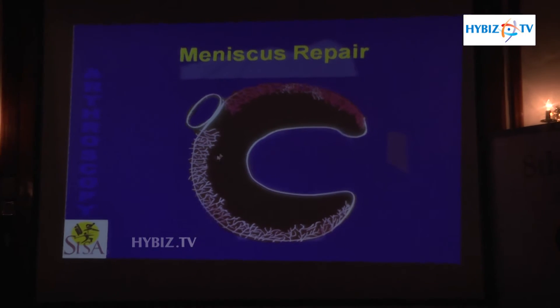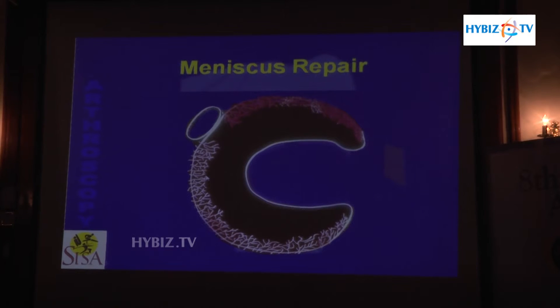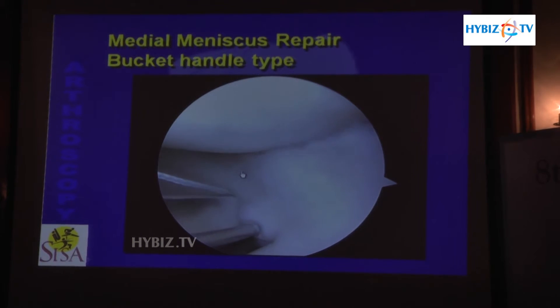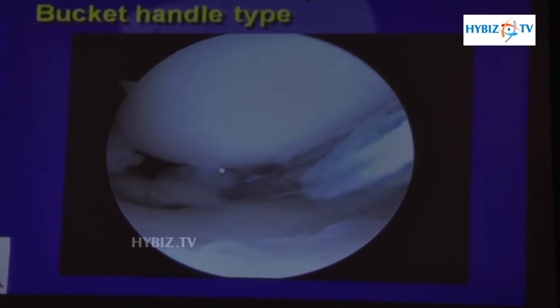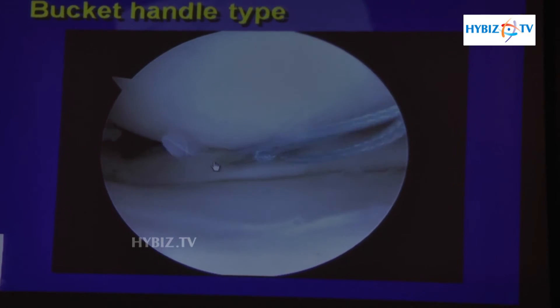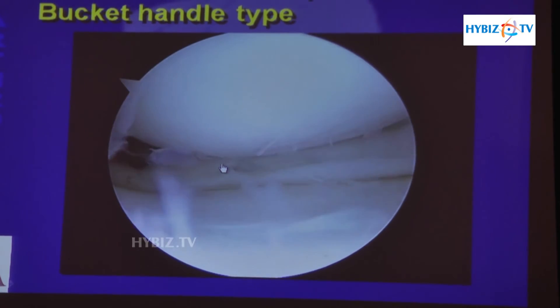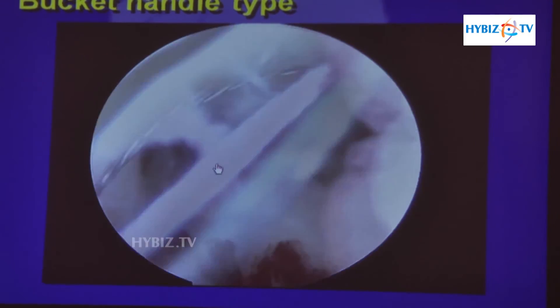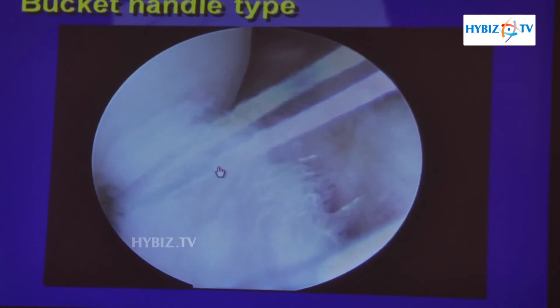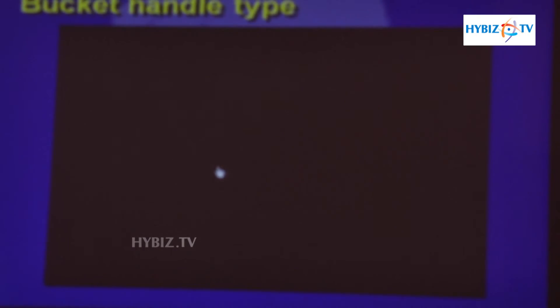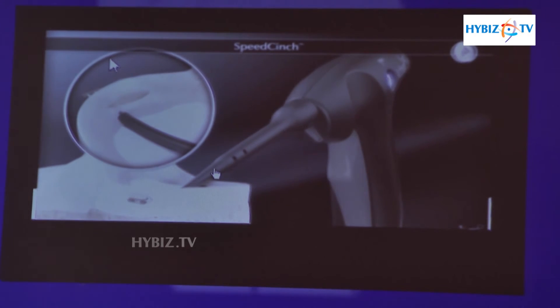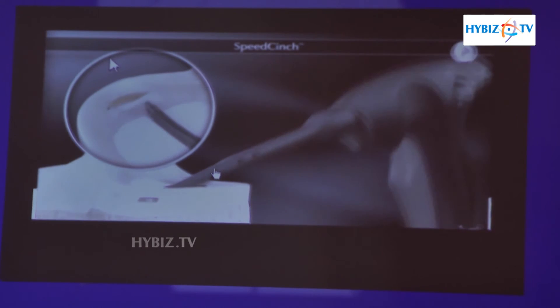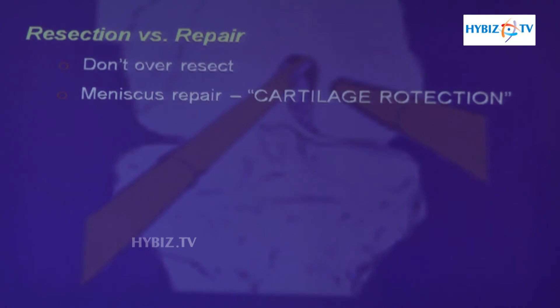Some meniscus tears — especially those which are repairable — we have to repair. Only the outer one third is vascular. In this congress we have shown meniscus tear repair techniques. We are preserving the meniscus cushion. There are various techniques and devices to repair the meniscus. The meniscus is a C-shaped structure. We repair the meniscus using different instruments — that is why we are teaching our orthopedic surgeons. This is after meniscus repair. We now have newer instruments and advanced techniques to do meniscus repair. Earlier we used to do it with needles; now speed pinch has come and we can do meniscus repair much faster. Remove the meniscus very carefully — if it is repairable, try to repair it.